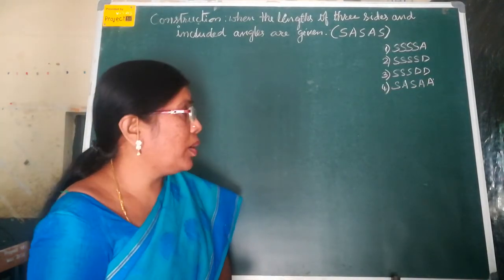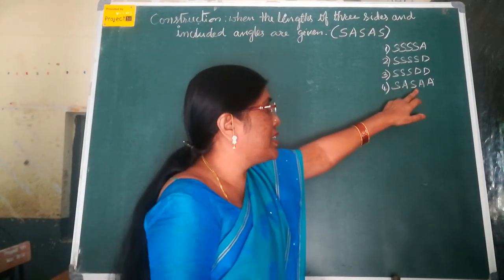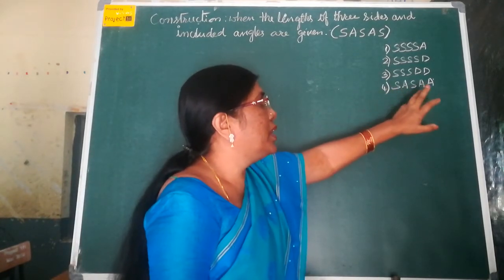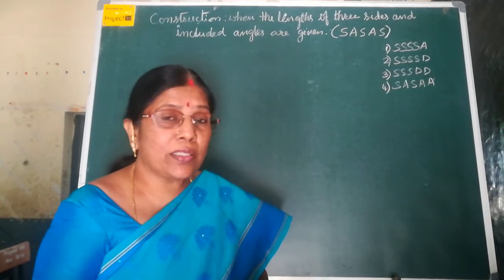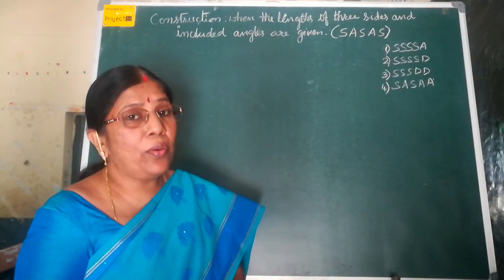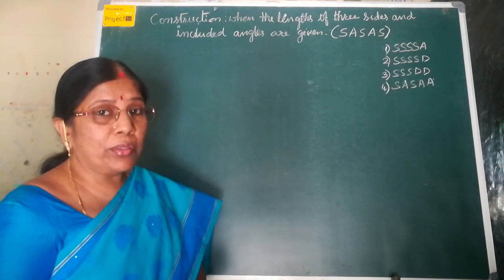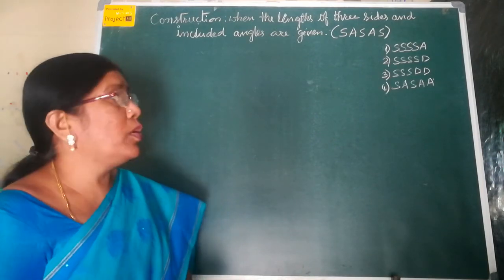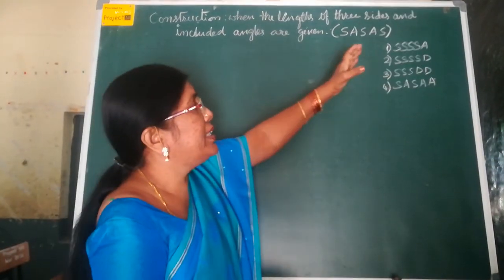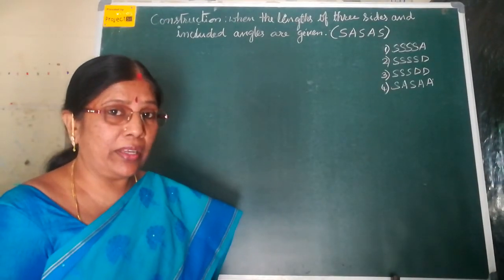we can construct a quadrilateral, and when 2 adjacent sides and 3 angles are given, then also we constructed a quadrilateral. Now let us learn how to construct a quadrilateral when 3 sides and included angles are given.